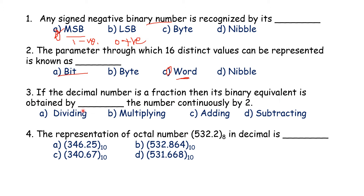Next question: if the decimal number is a fraction, its binary equivalent is obtained by multiplying the number continuously by 2 and collecting the integer parts. If it is an integer, the binary equivalent is determined by dividing the number by 2 and collecting the remainders. So multiplying is the correct answer here.